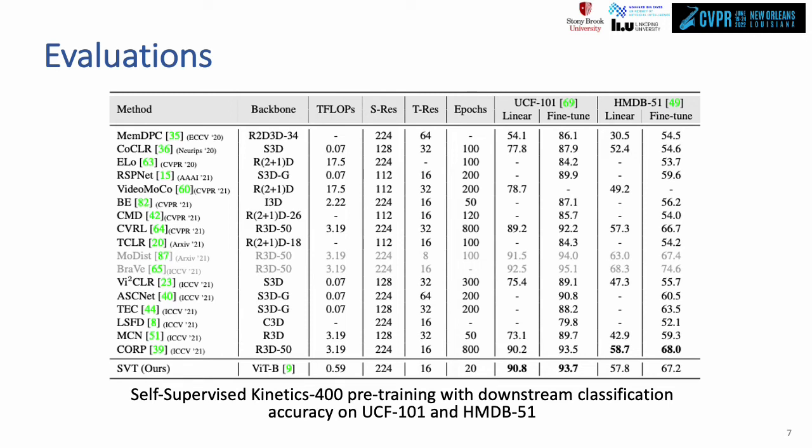A linear head over the SVT backbone is used during evaluation under both linear probe with a frozen backbone or end-to-end fine-tuning settings. SVT obtains competitive results in comparison to state-of-the-art in both cases over multiple datasets. Please check out our paper for more results.